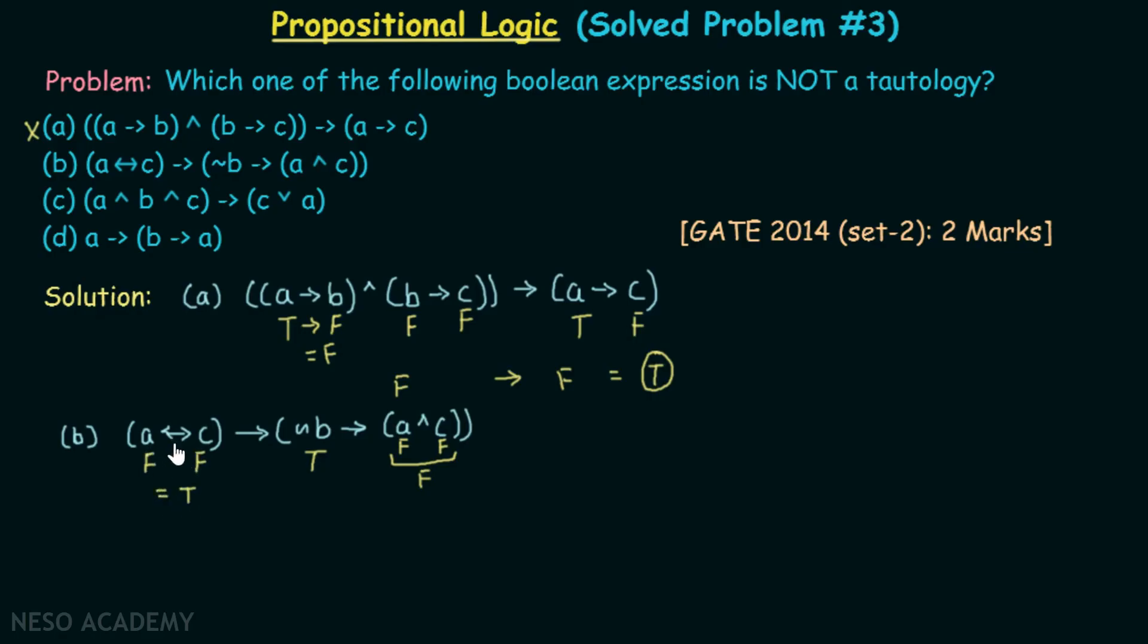Because here is a biconditional operator. Whenever we have the same truth values for the left expression as well as the right expression, then a biconditional statement becomes true finally.